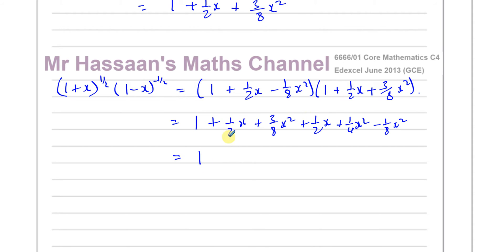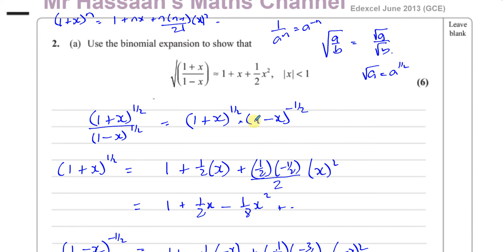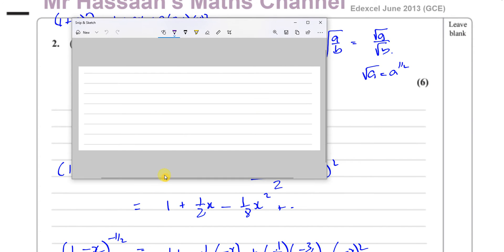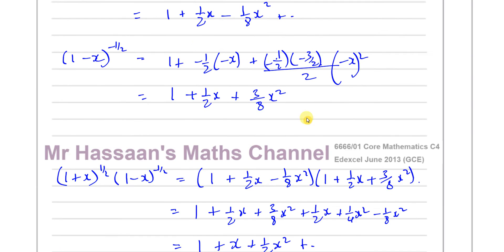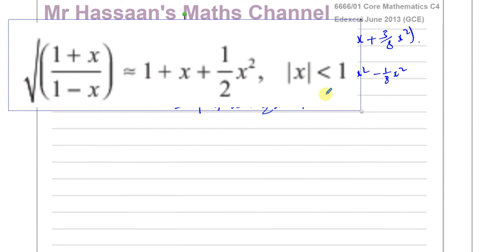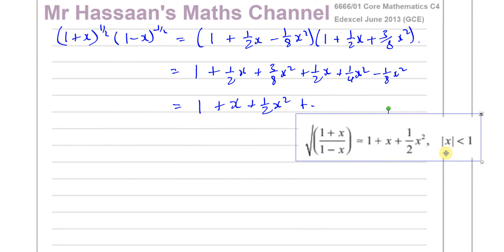Collecting terms: 1 plus (a half plus a half)x equals 1 plus x; for x squared: three eighths minus one eighth is two eighths, which is a quarter, plus a quarter gives a half. So we get 1 plus x plus a half x squared, which is exactly what we had to show.